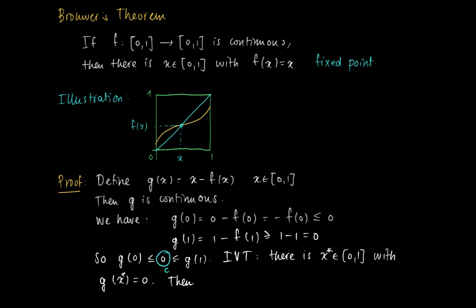So in that case, if g of x star equals 0, then we know that x star minus f of x star equals 0, because this is the way we define g of x star. Or equivalently, f of x star equals x star. So we found actually a fixed point of the function f.